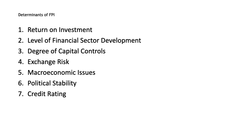Degree of Capital Controls: There is a negative relationship between the magnitude of FPIs and the extent of capital controls in the host nation. There are two types of capital controls — administrative or direct controls, and market-based or indirect controls. Direct controls include outright prohibitions, restrictions on capital and current account transactions, repatriation restrictions, and restrictions on use of funds. Market-based controls include multiple exchange rates and taxation on cross-border flows. Capital controls increase the cost of investment, making a nation with high capital controls unlikely to attract foreign portfolio investment.